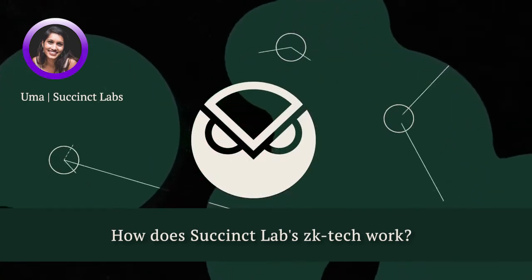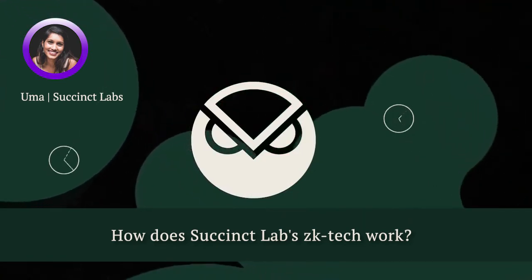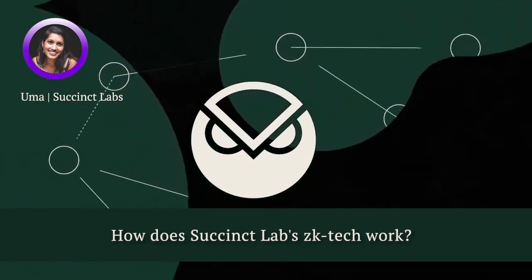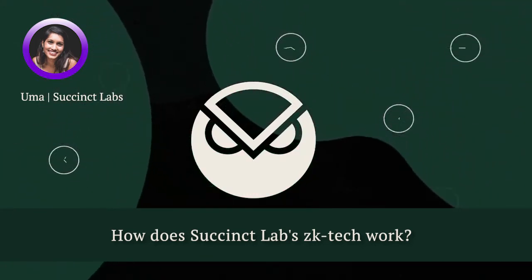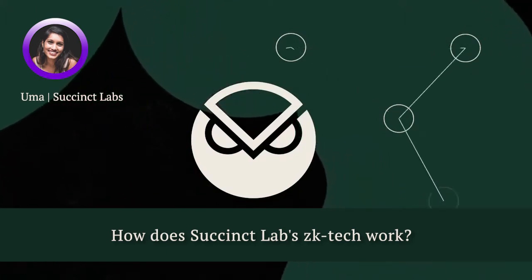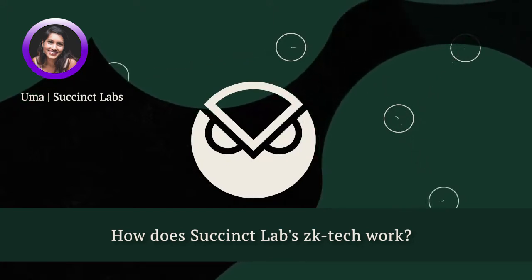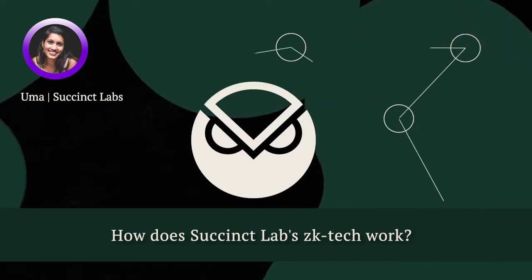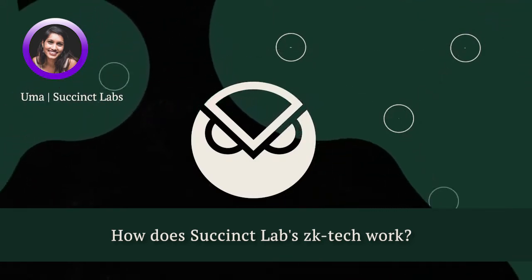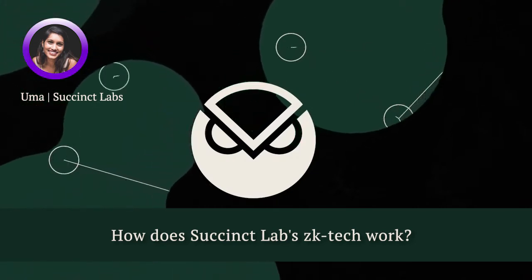The other part is the ZK part — the zero knowledge part — where basically I can prove to a verifier that f(x) equals y, and I don't have to reveal x. I know a set of inputs and I can keep them hidden. When you compute f of those inputs, it results in this answer, and the verifier can verify that I know a set of inputs without me having to reveal what those inputs are. That's the zero knowledge part, and that's the part used for privacy.